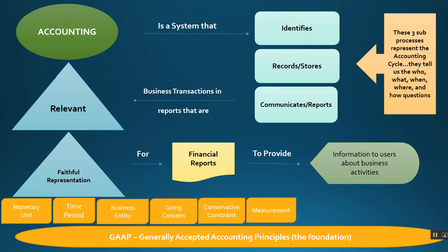Next we have the Measurement principle, which determines the amount that will be recorded and reported. The measurement principle requires that the data we record and report must be objective and verifiable. We can't say 'I think it is' — if you don't have source documentation to prove the value, then we have a measurement problem and, more importantly, an objective and verifiable problem.